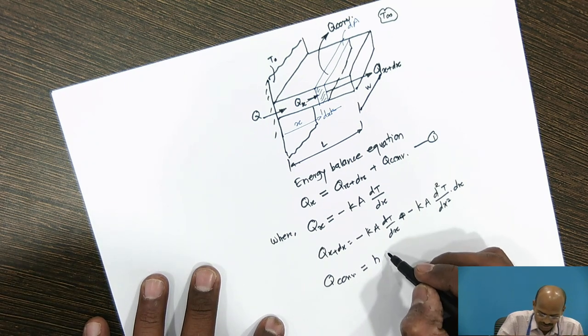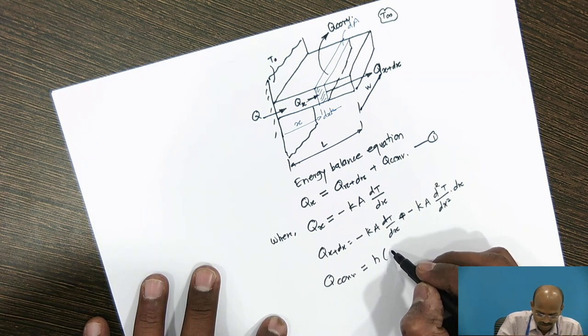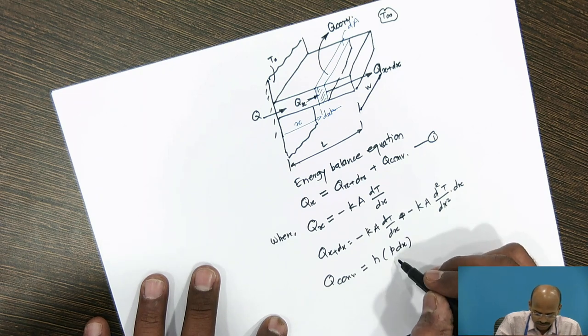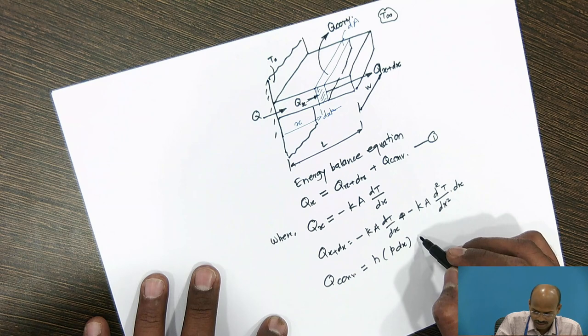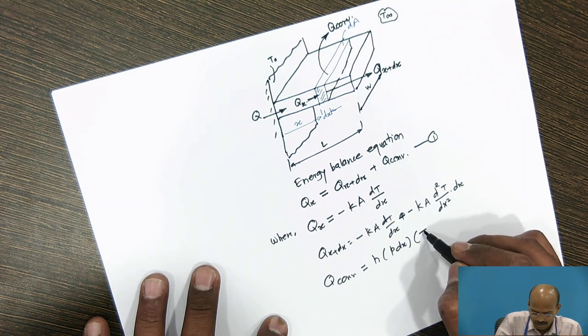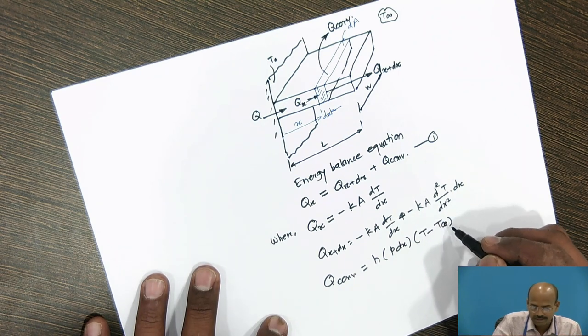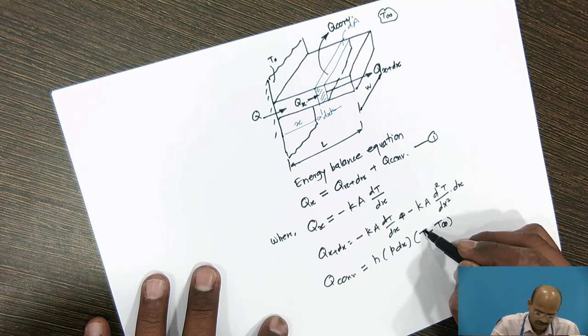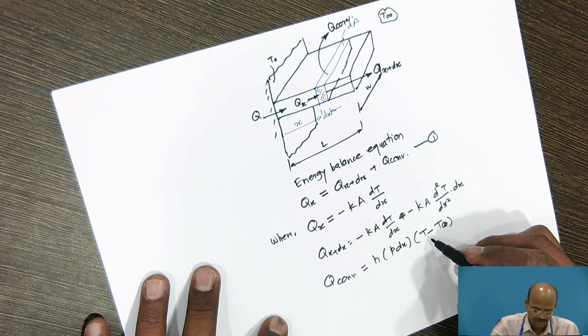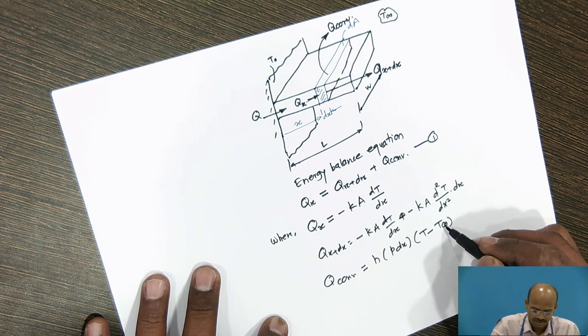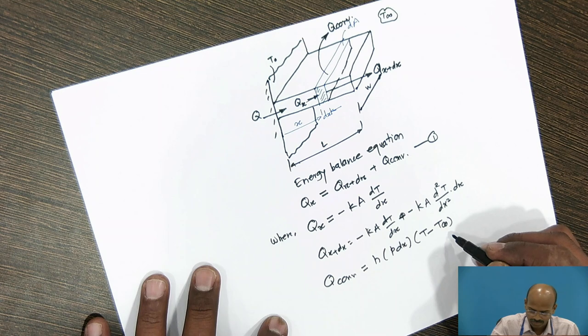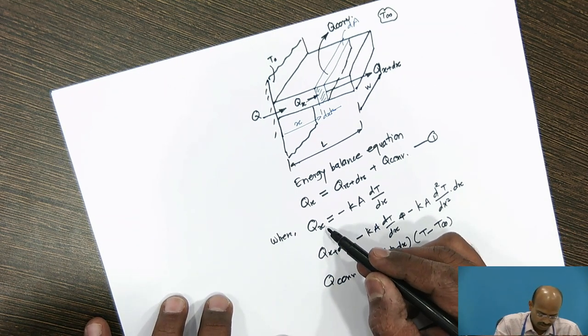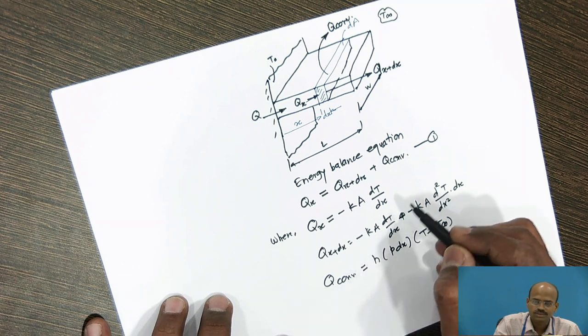I can write h times area which is nothing but perimeter into dx. This is hP dx (T - T∞). As this is the general equation, T stands for fin temperature minus surrounding fluid temperature.